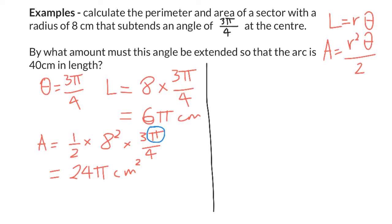Now, the second thing we need to do here, by what amount must this angle be extended so the arc is 40 centimeters in length? So, I want to know now what's going to give me L equals 40. I've already got L equals 6π, which is about 18, 19 centimeters.